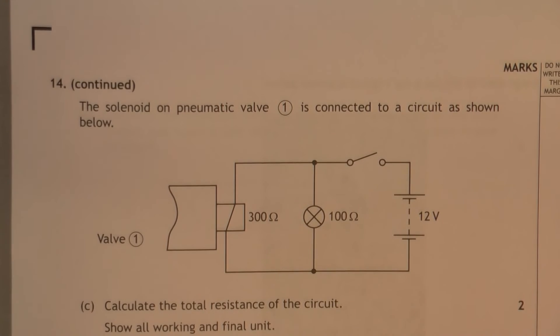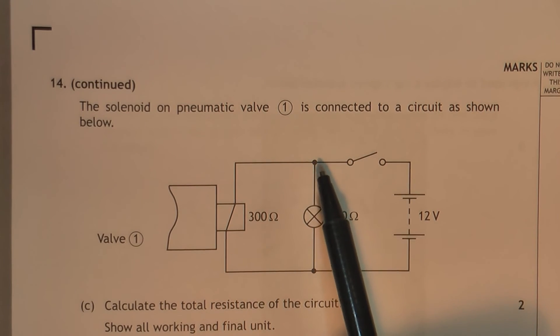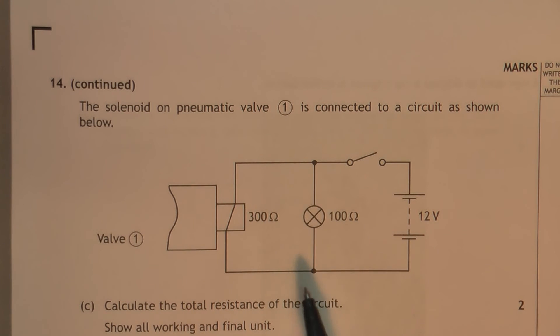This circuit is asking you to find the total resistance. Now, there's two resistors, 100 ohms and 300 ohms. These two are in parallel. If you imagine the current coming out here, going through the switch when it's closed, when it gets to that node, the current has a choice. It can go that way, or it can go that way. So these are in parallel.